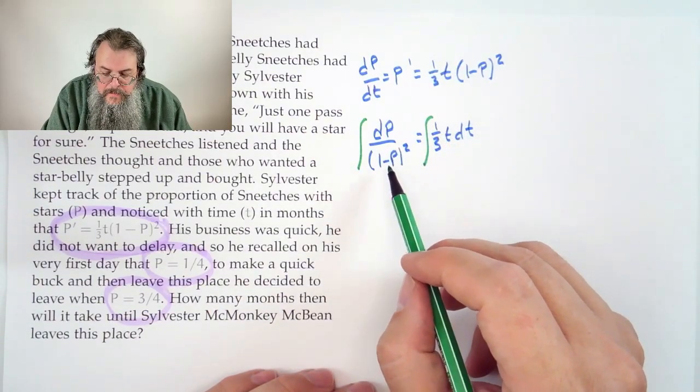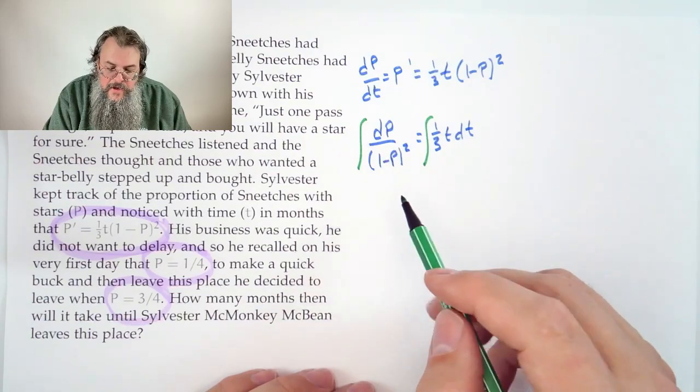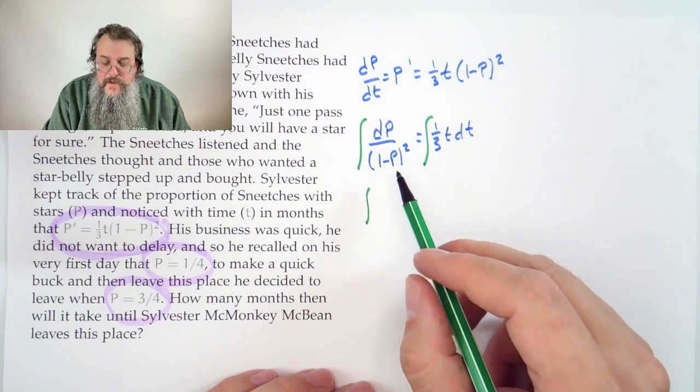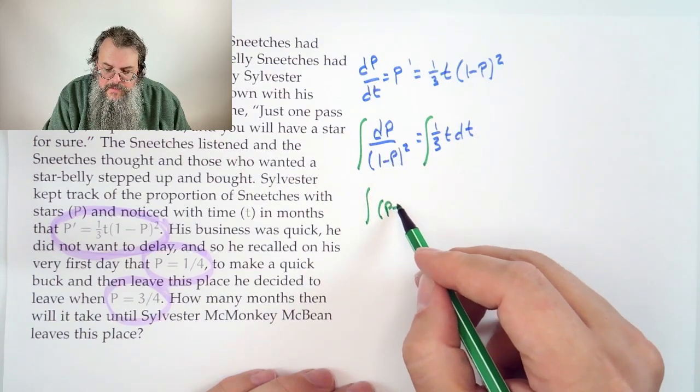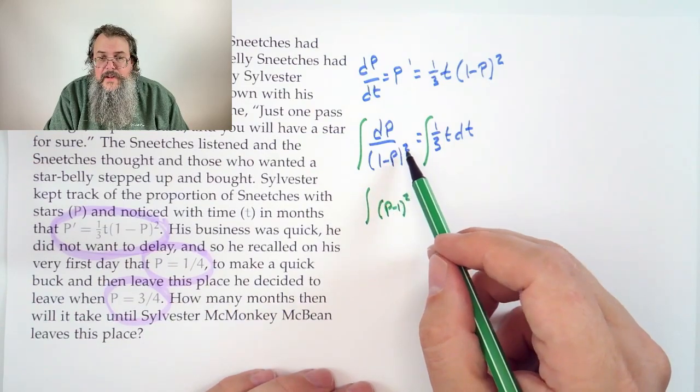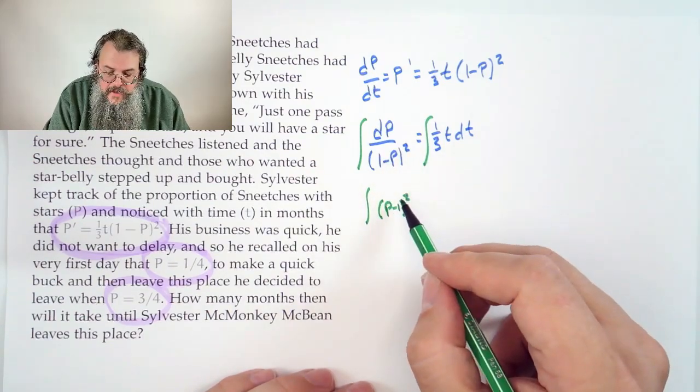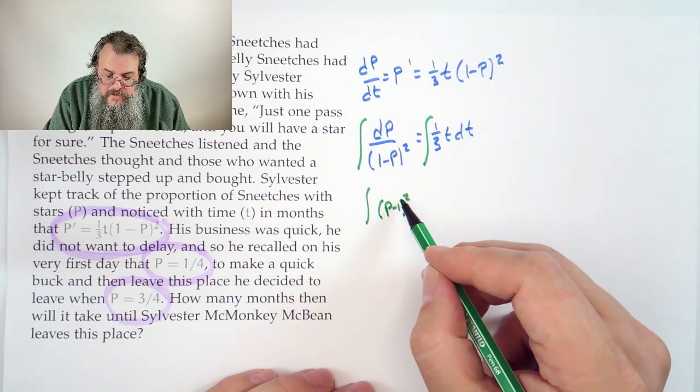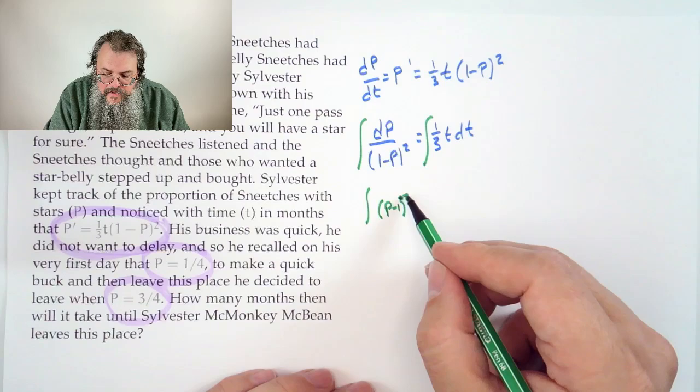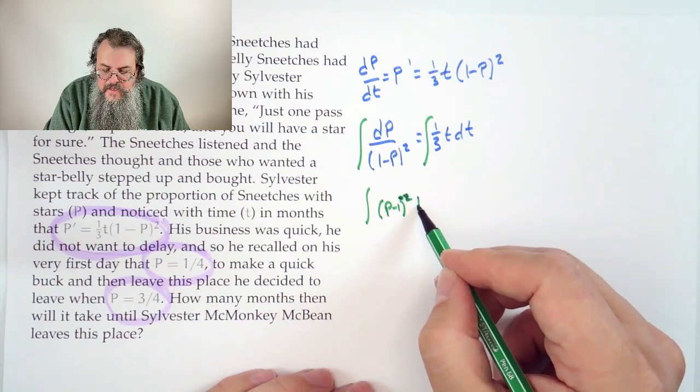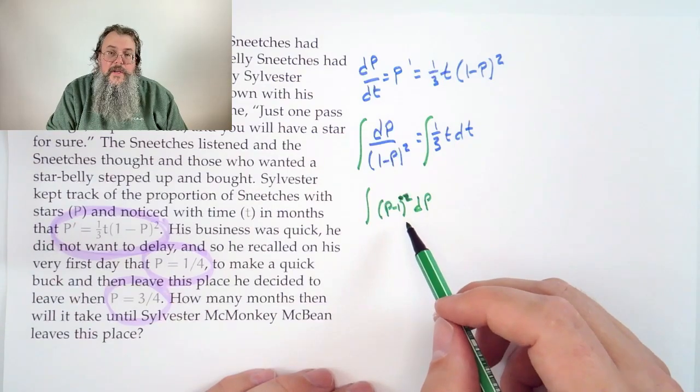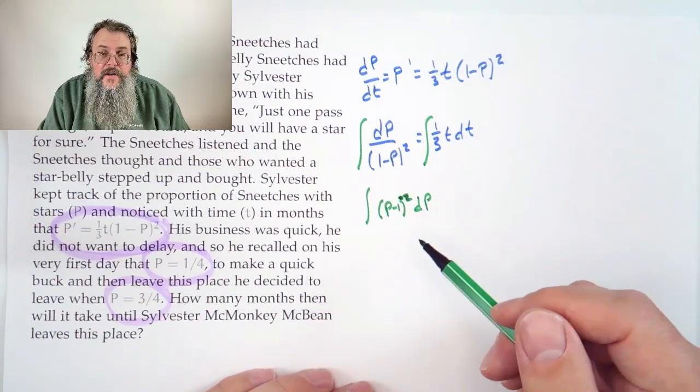Now, how do we integrate something like dP over (1 minus P) squared? Well, you could also write this - notice because it's squared, we could write it as (P minus 1) quantity squared, because it doesn't matter if you have a negative there. Negative 1 squared becomes positive. But it's downstairs, so you can write it to the minus 2 power. So it's hard to see that, but there's a minus 2 there.